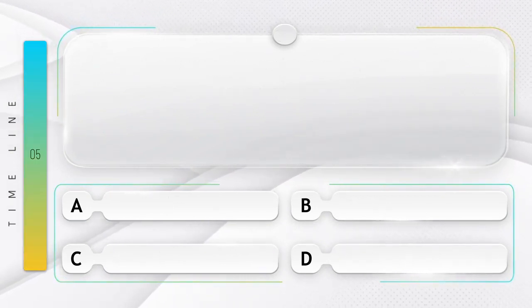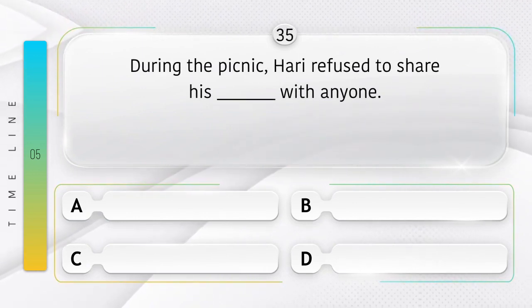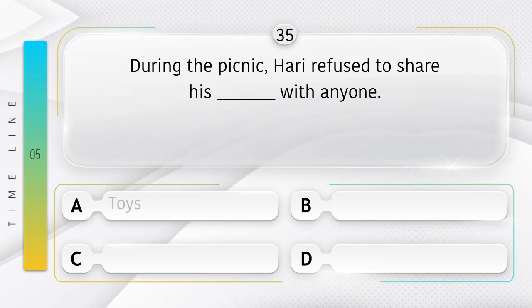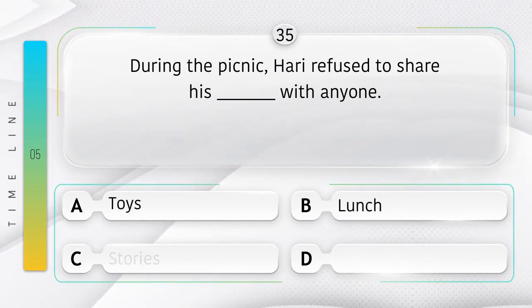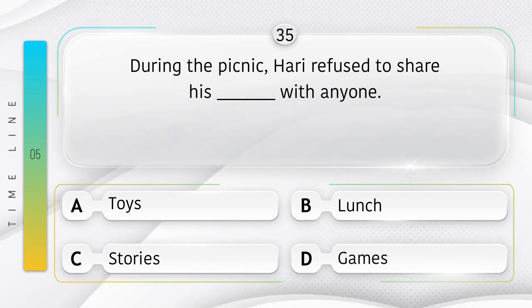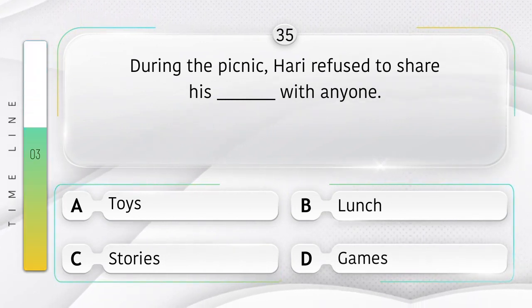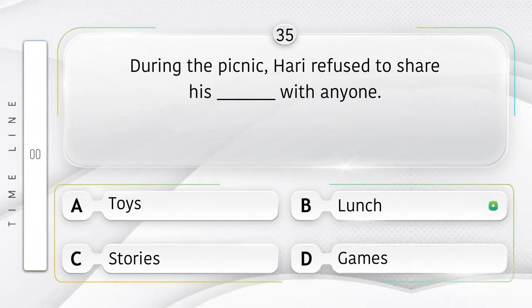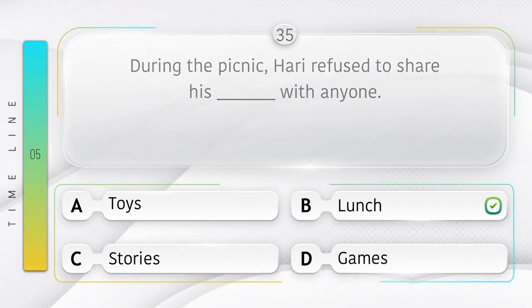Teased. During the picnic, Hari refused to share his ______ with anyone. Option is A. Toys. B. Lunch. C. Stories. D. Games. Answer is option B.